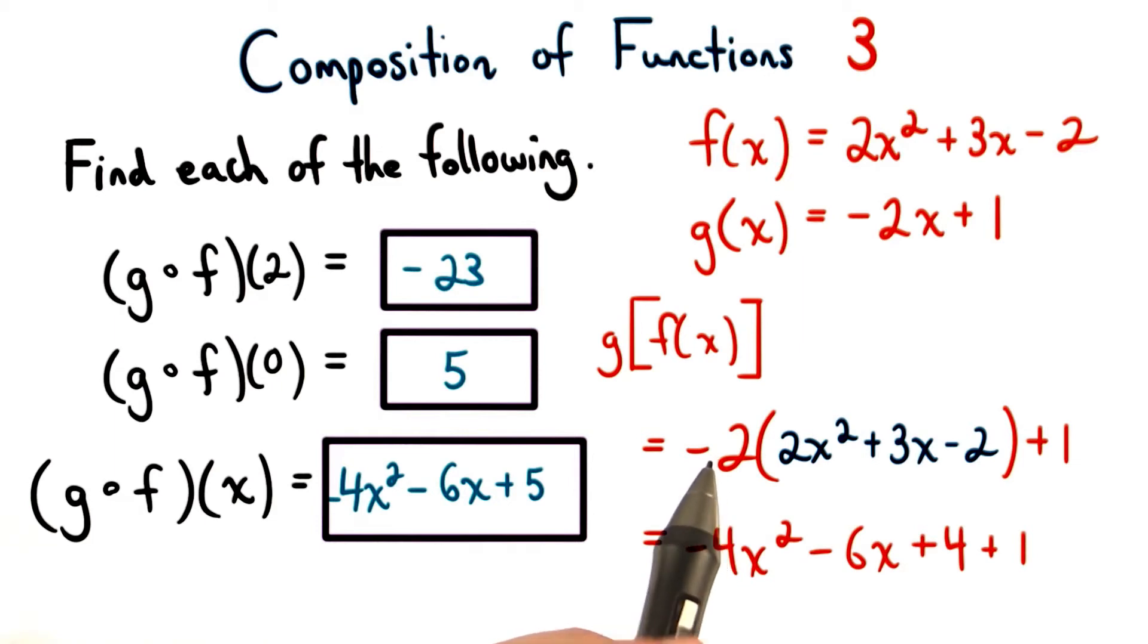Distributing the negative 2, we'll have negative 4x squared minus 6x plus 4. And dividing these 2 like terms, we'll have our final composite function.